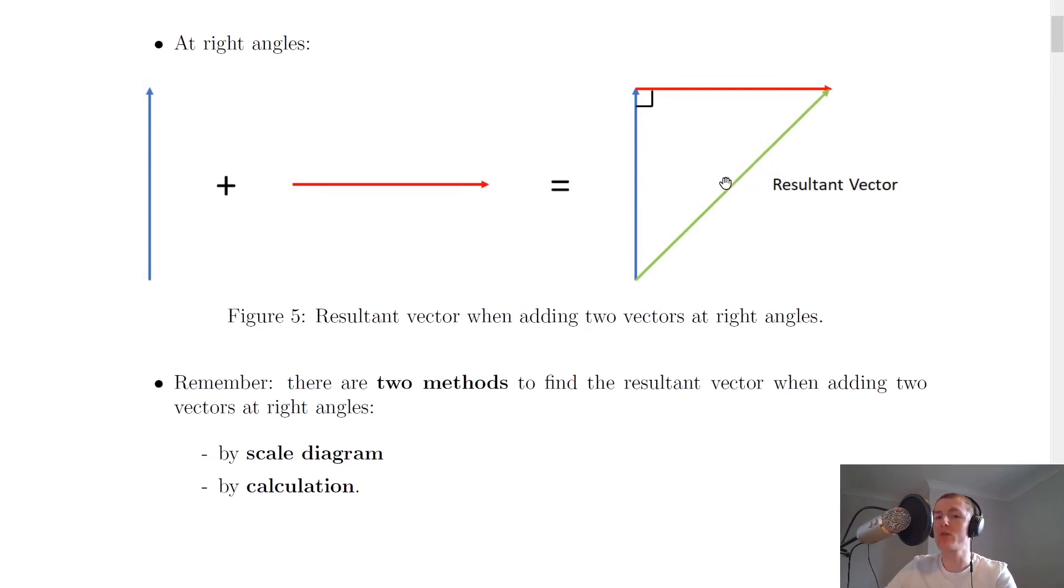And you'll often see the two arrows on here pointing in the direction that the resultant vector is going in from start to finish. And that makes it different to these two individual vectors with one arrow on it.